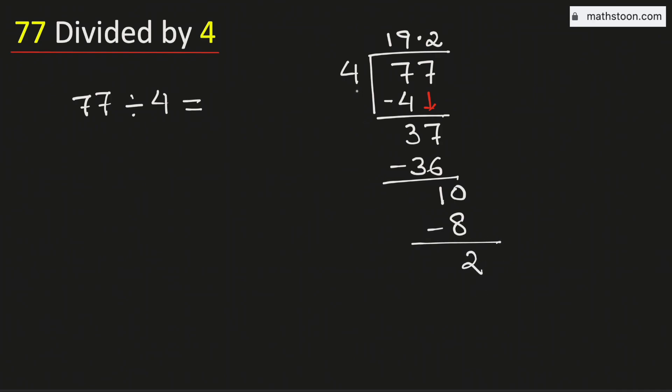Again 2 is less than 4. That is why we will again borrow 1 zero. And we know that 4 times 5 is 20.